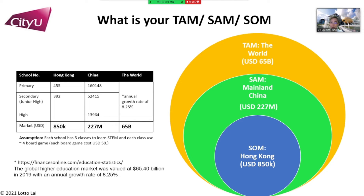Here is my example for a program focused on primary, secondary, and high school. The assumption is that each school has five classes learning STEM, each class uses four programs, and each program costs 50 US dollars. From global education market data, the total world education value is 65 billion. Counting the number of schools in China, the Serviceable Available Market in China geographically is 227 million.